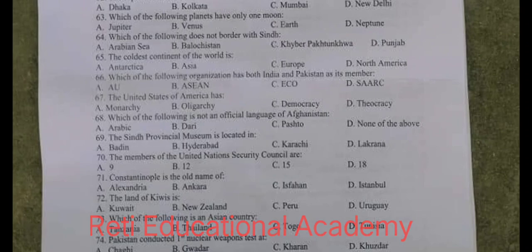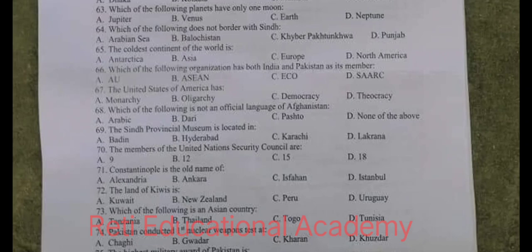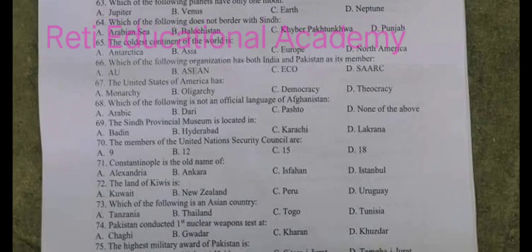Question number 67. The United States of America has: A. Monarchy, B. Oligarchy, C. Democracy, D. Theocracy. Monarchy is when a king rules a country. Oligarchy is when few persons rule a country. Democracy is where elections happen after 5 years. Theocracy is where religious persons rule over the country. So the right option is C. Democracy.